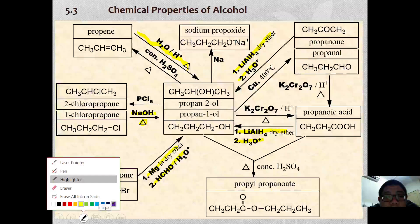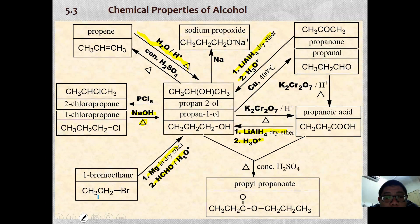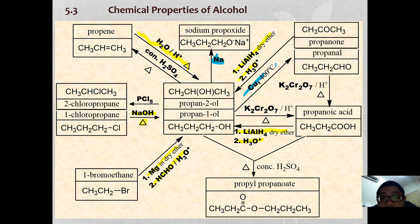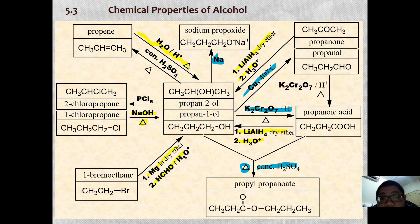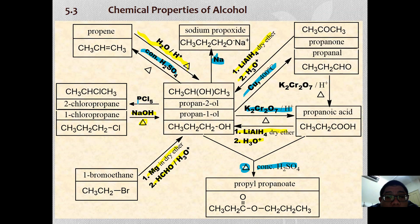Alcohols generally have a few reactions that we will cover in today's lesson. We're going to see how alcohols react with sodium, the oxidation of alcohol using copper at 400 degrees Celsius to form aldehyde, and how using an oxidizing agent leads to carboxylic acid. We'll also look at esterification with carboxylic acid and concentrated sulfuric acid, dehydration of alcohol, and halogenation of alcohol.